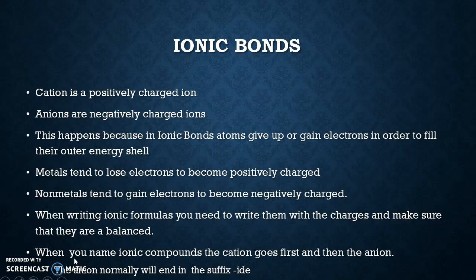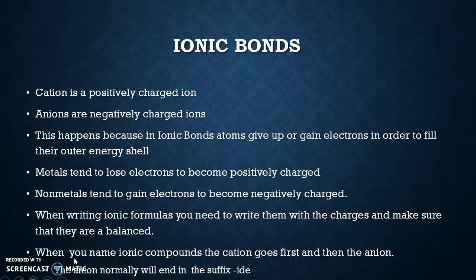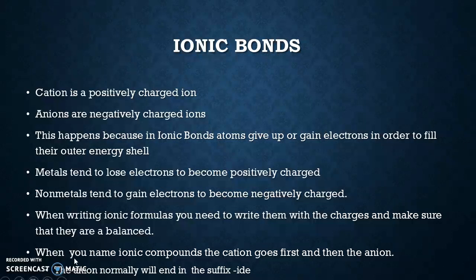Ionic bonds are the first type of bond we'll talk about. You have what's called a cation — one of your vocab words — which is a positively charged ion, meaning that element gave up an electron to another element, so it now has a positive charge. An anion is a negatively charged ion, meaning it picked up and gained an electron. Sodium would be a cation because it gives up an electron, and chloride would be an anion because it gains one. In ionic bonds, atoms give up or gain electrons to fill the outer energy shell and satisfy the octet rule.